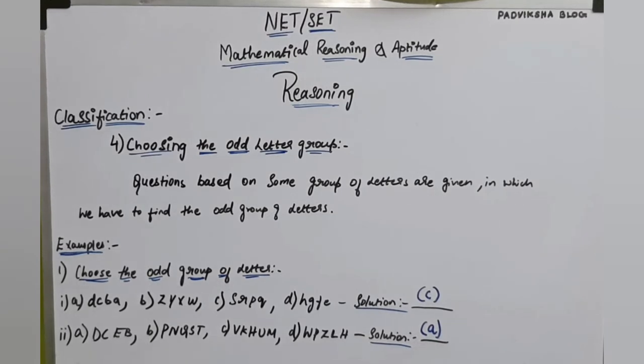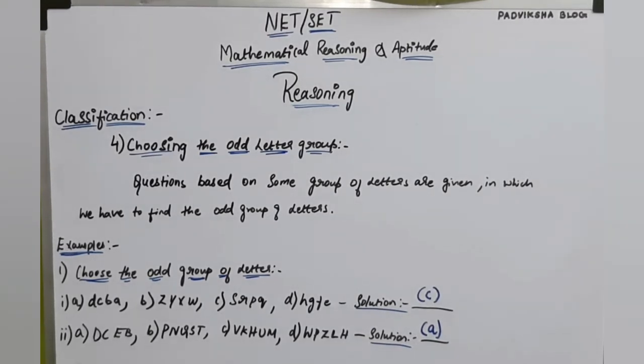A is the answer. I think you all understood this concept. Our classification concept is over in reasoning. Next we will talk about coding.